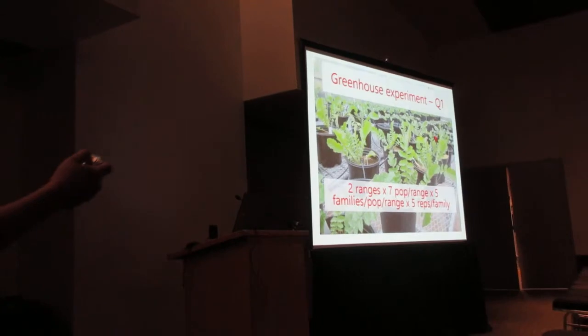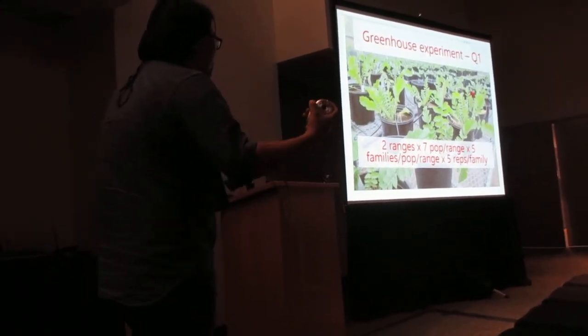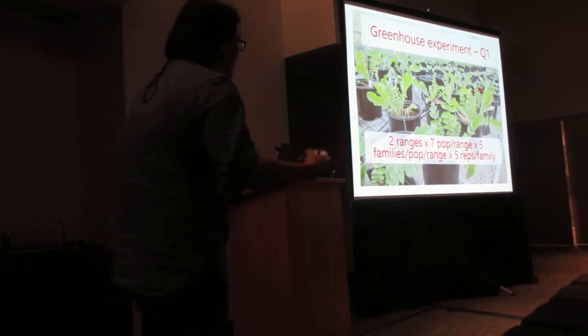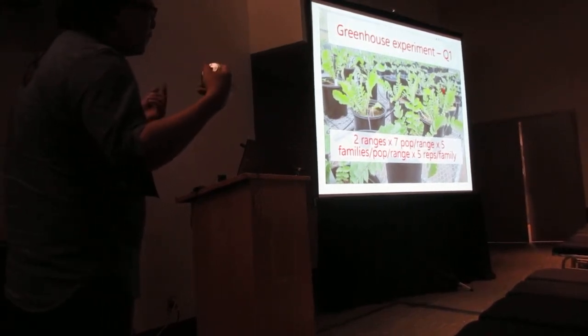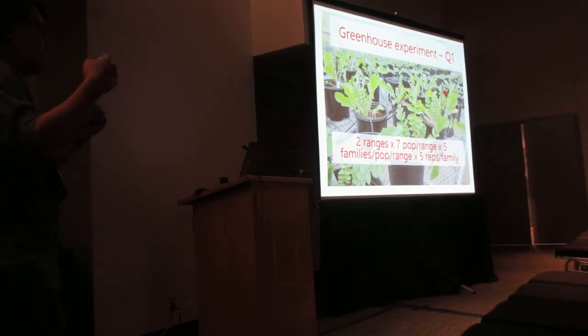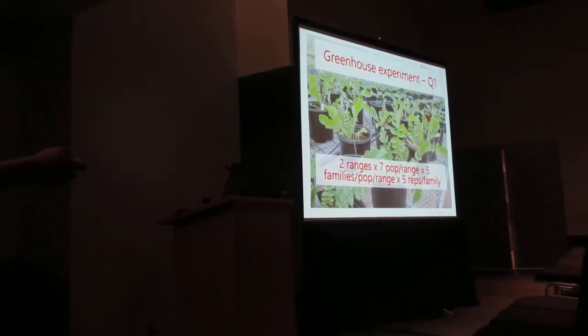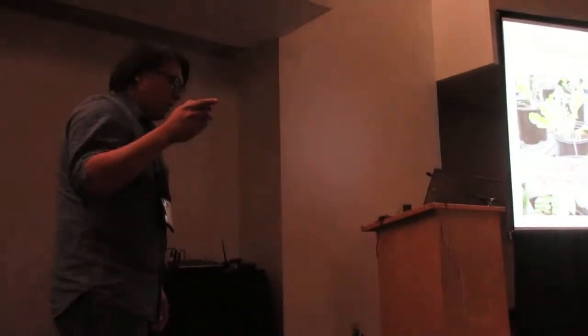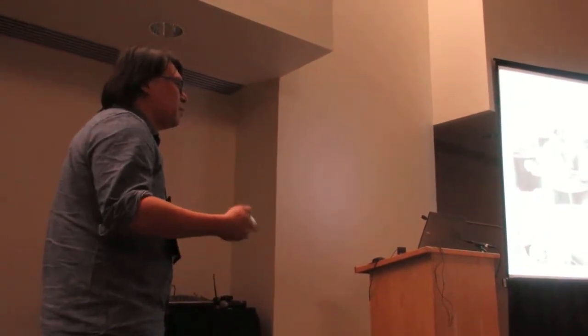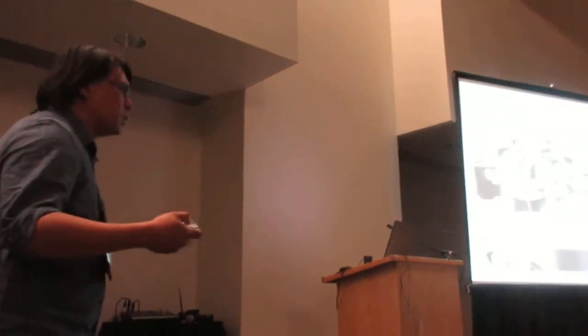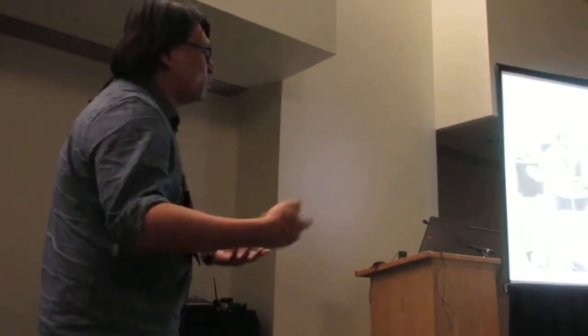To answer my first question, I did a greenhouse experiment where I artificially crossed plants from the two ranges, native and invasive. From each range, I selected seven populations, and then from each of the populations, I mated five families. For each family combination, I chose five replications. Given that these plants that I measured had parents that I knew and were grown in a common environment, it's safe for me to assume that most of the variation that I'm observing is due to a genetic basis.